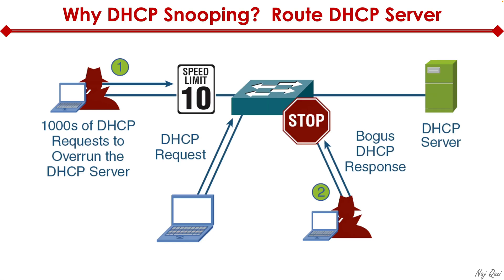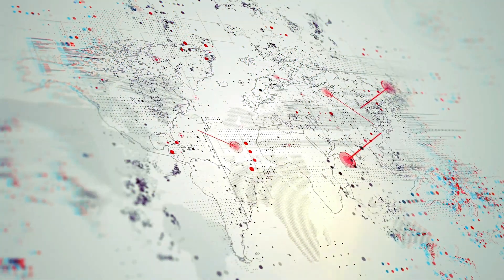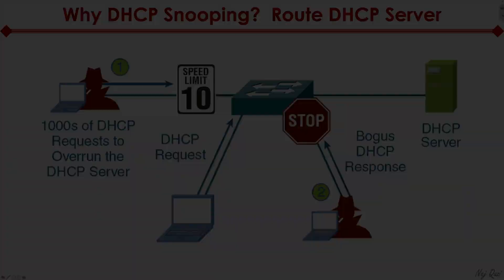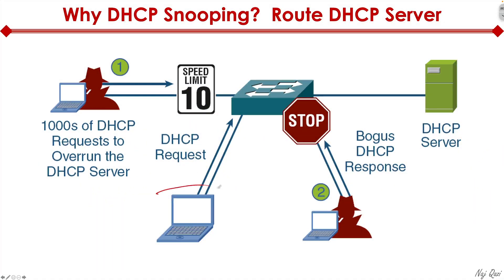Another important security concept to keep in mind is DHCP snooping. Here in this diagram, we have a legitimate user, let's say Bob, and he wants to send a DHCP request so his laptop can communicate over the network. There are a couple of bad actors here. The guy to the left is sending thousands of DHCP requests to overrun the DHCP server, and there's another guy at the bottom of the screen sending bogus DHCP responses.